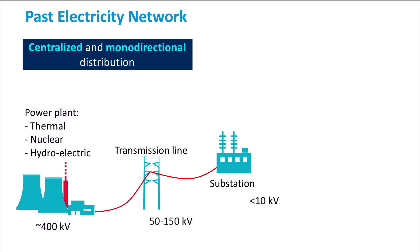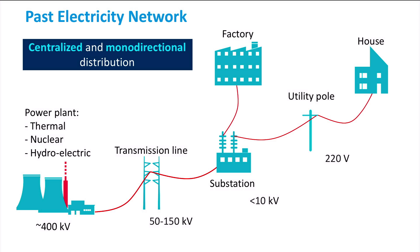Before arriving at the socket of a house or factory, the voltage must be further decreased to less than 10,000 volts. This is performed in a substation, which has the role to switch, control, and protect the electrical circuits. Then, from this substation, the power is supplied at different voltage levels to the loads. The loads are, in this case, the houses, factories, or utilities in a city.